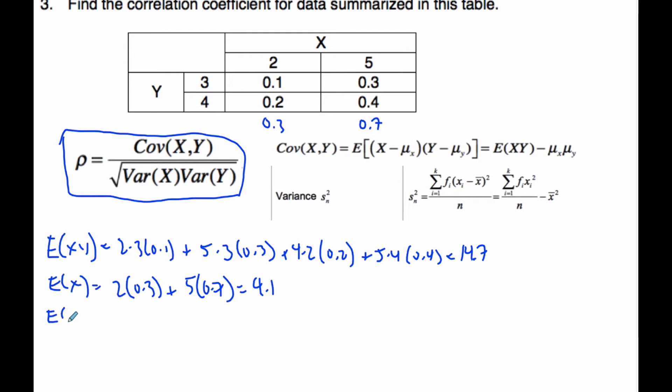Similarly, the expected value of Y is—well, this is 0.4, this is 0.6—so it's 3 times 0.4 plus 4 times 0.6, which is calculated to be 3.6.